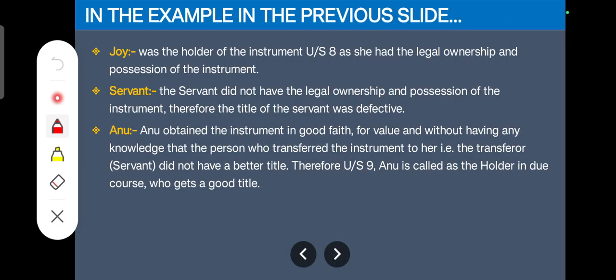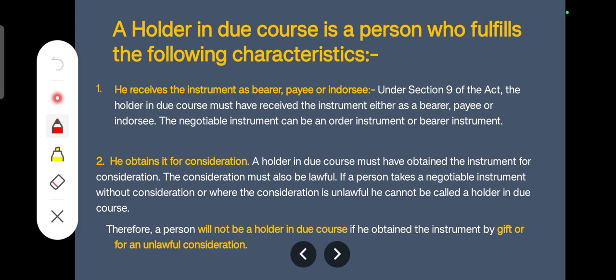To clarify: Joy was the holder under Section 8, having legal ownership as well as possession. The servant did not have legal ownership — his title was defective — so he was neither the owner nor a holder in due course. Anu obtained the instrument in good faith for value, so she is the holder in due course and her title is considered effective. A holder in due course must first receive the instrument as bearer, payee, or endorsee — meaning he or she has not stolen it or taken it under coercion, but is either the bearer, payee, or endorsee.